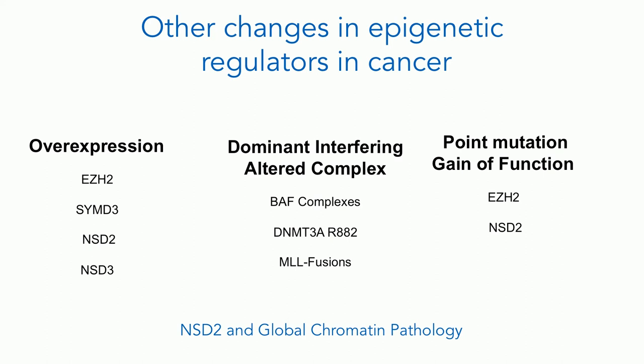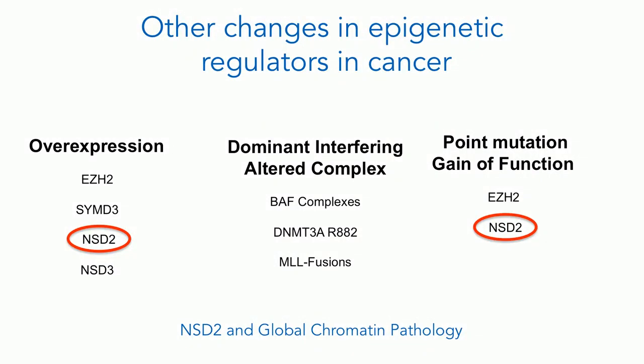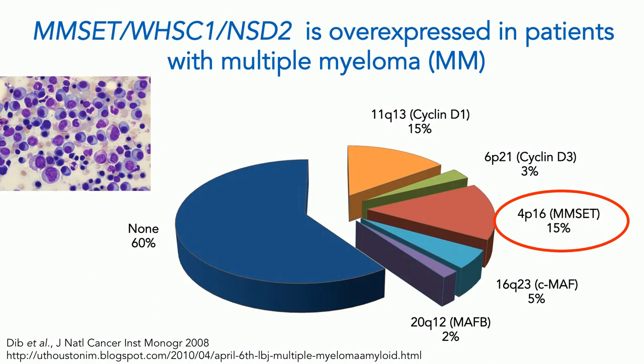There are other ways, besides inactivating mutations discovered by genome sequencing, that chromatin regulators can be affected in cancer, including overexpression of these proteins. There are dominant interfering complexes, such as DNA methyltransferase site-specific mutations that interfere with normal DNMT3A. MLL fusion proteins are another example. And very rarely, there are point mutations that are gain-of-function. We happen to be interested in NSD2, which has several different names, and causes pathology both by overexpression and by a gain-of-function point mutation.